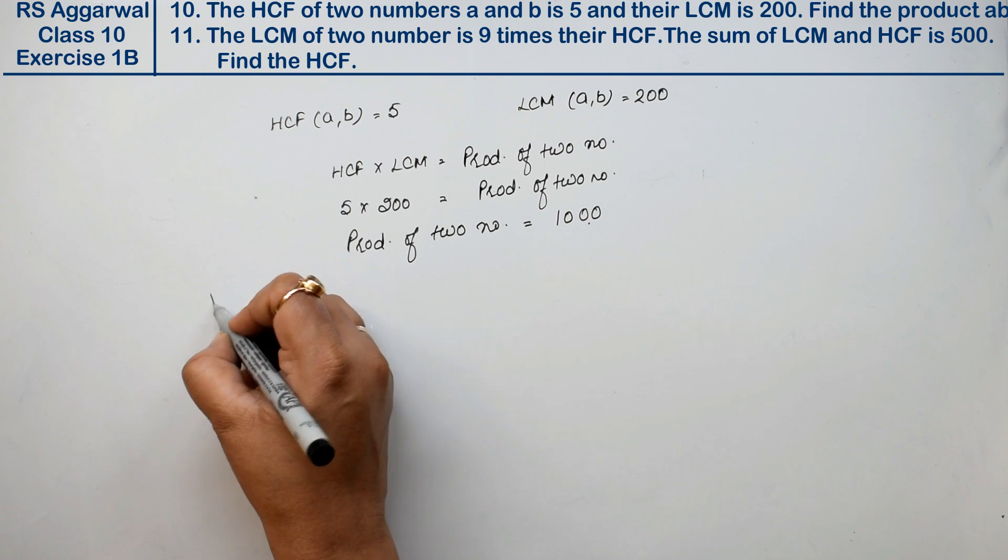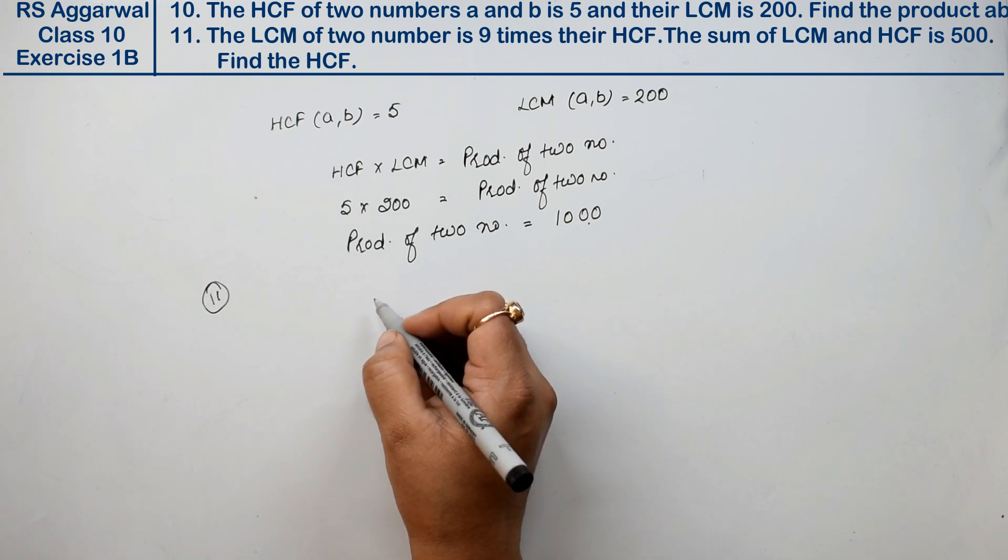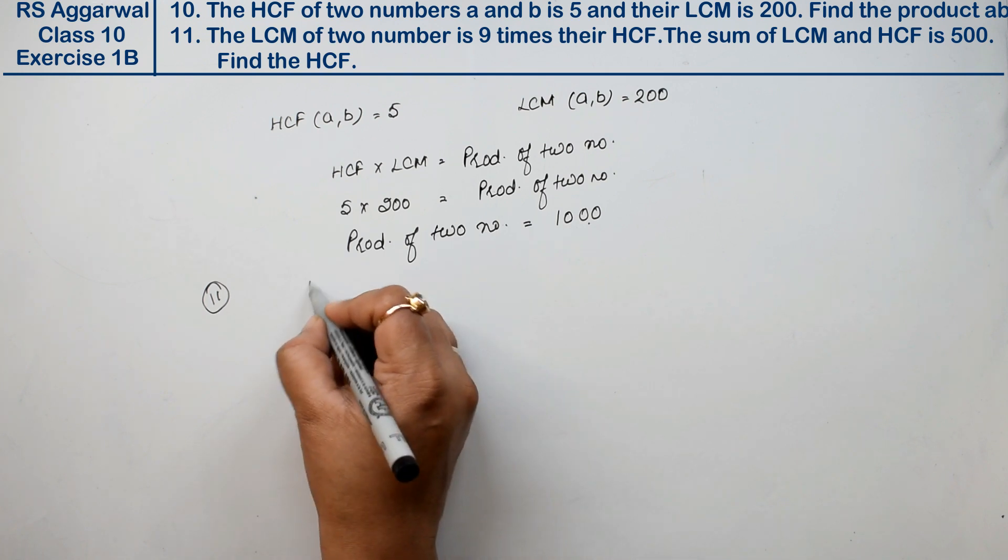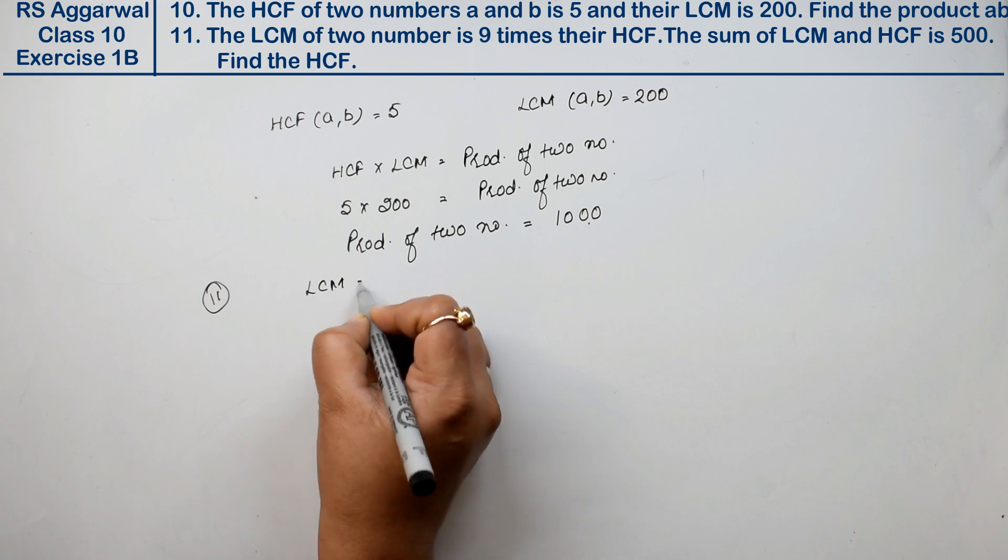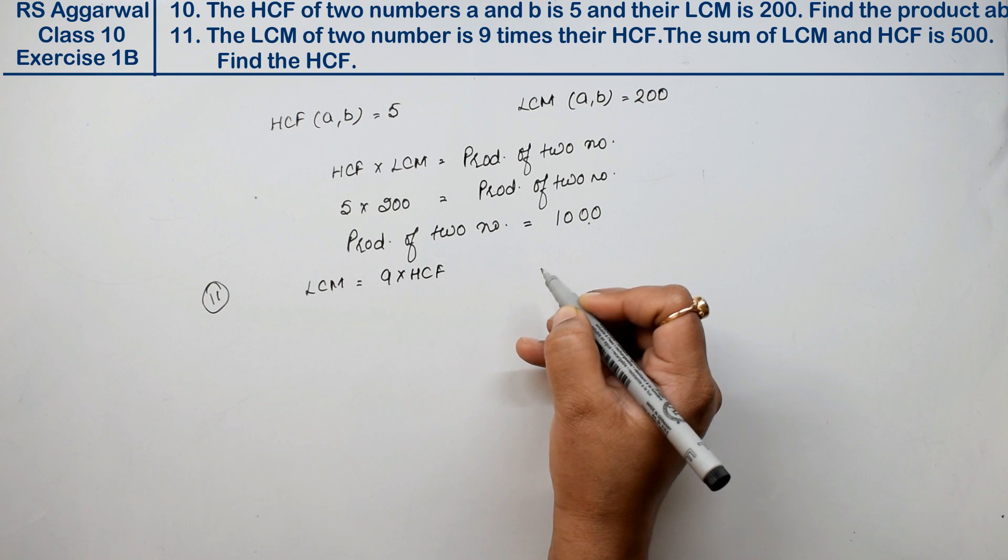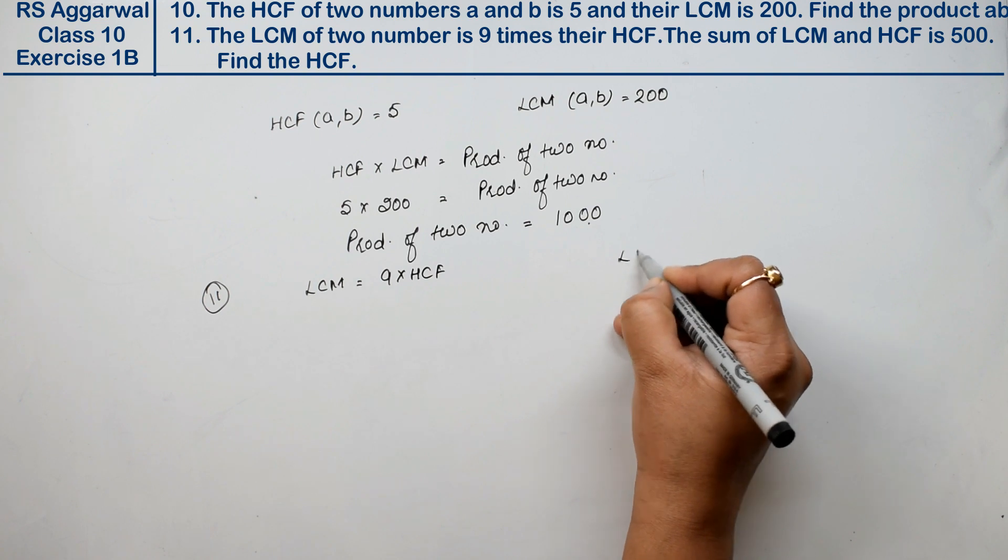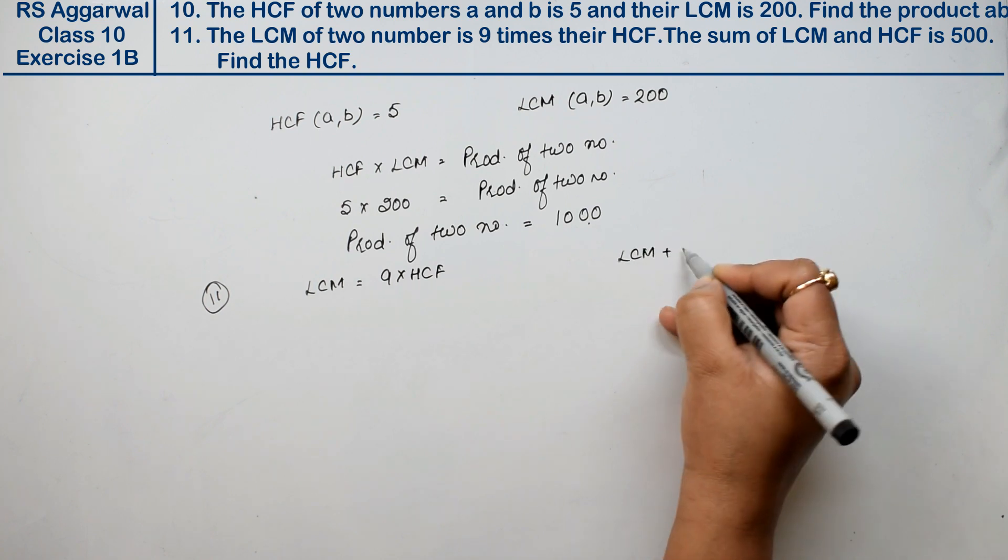Let's do question number 11. Question number 11 says the LCM of two numbers is 9 times their HCF. The sum of LCM and HCF is 500.